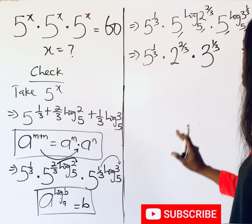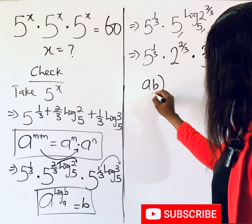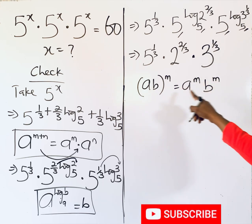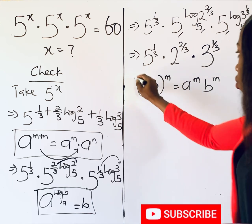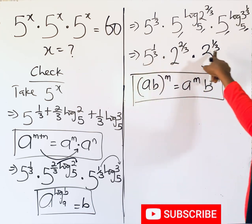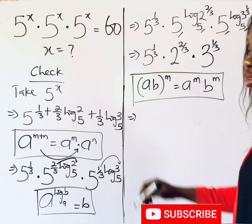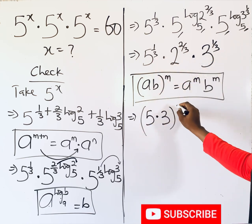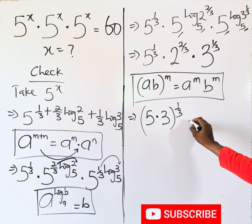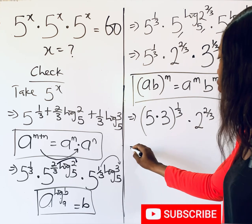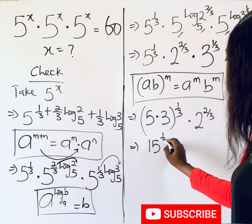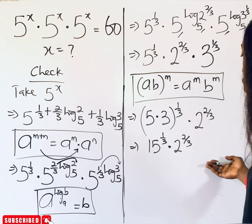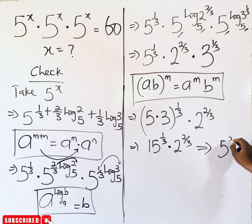Remember: for every (a·b)^m = a^m × b^m — they share the same power. Observing that 5^(1/3) and 3^(1/3) have the same power, we can combine them: (5 × 3)^(1/3) × 2^(2/3) = 15^(1/3) × 2^(2/3). So 5^x = 15^(1/3) × 2^(2/3).